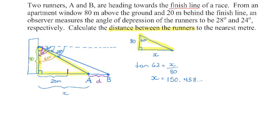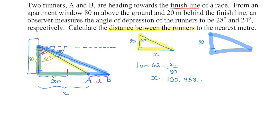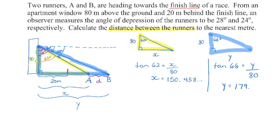Now for the second triangle — I'll use blue. Drawing it roughly over here, I still have that 80-meter height, still a right angle. On that blue triangle, the angle is 66 degrees. The base of the triangle I don't know, so I'll call it Y. We use the tangent ratio again: from the 66-degree angle, the opposite side is Y and the adjacent is 80. So tangent of 66 times 80 gives us Y equals 179.682.